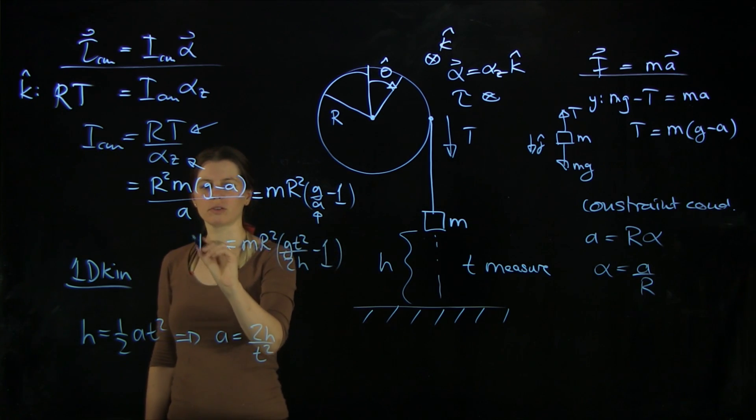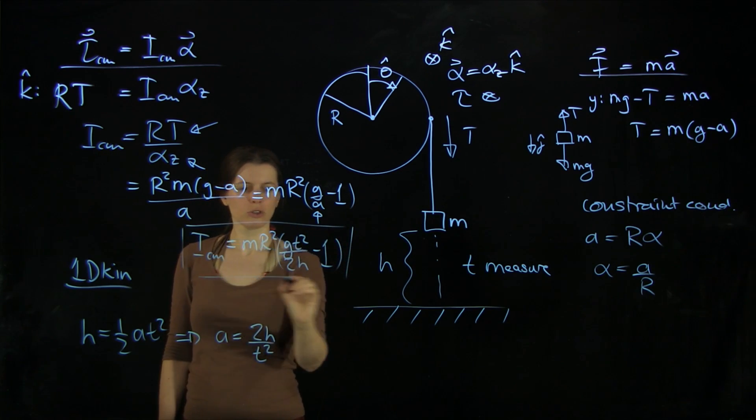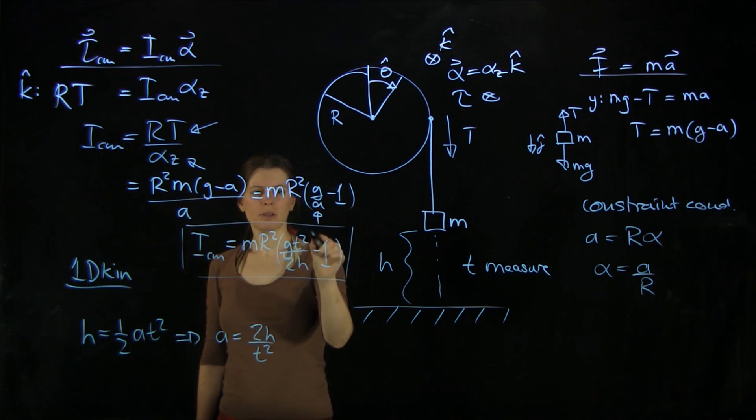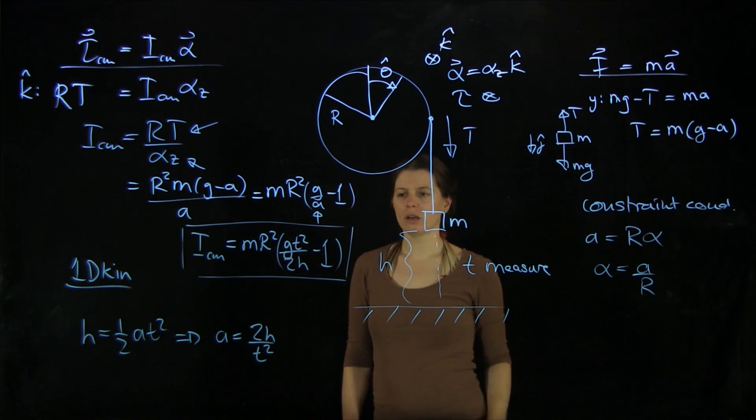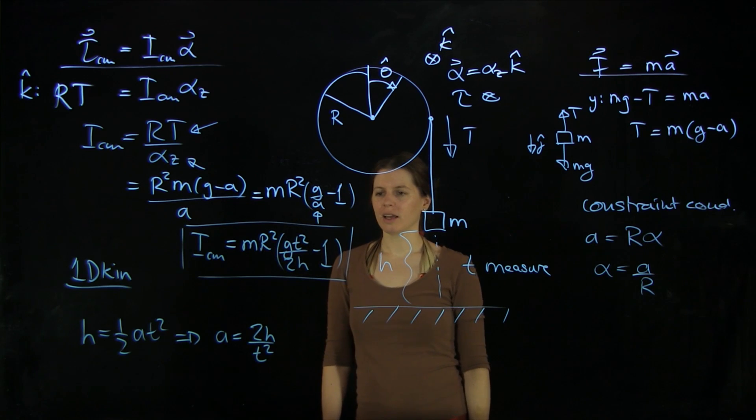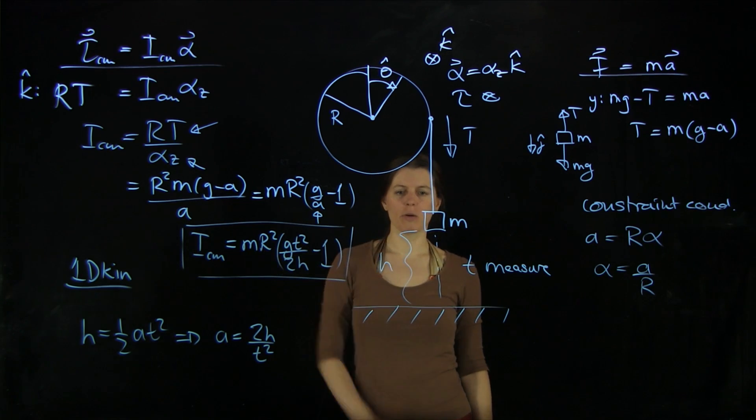And let's just write this here again. And that is our final solution. So now we have only measurable quantities here. The t we can measure. We just need a stopwatch and the h we can measure as well.